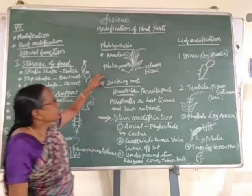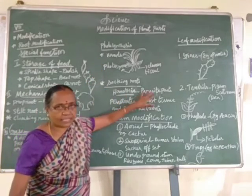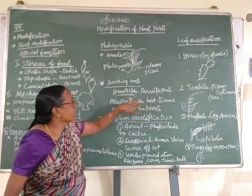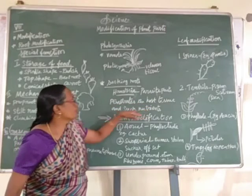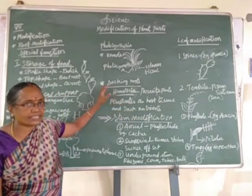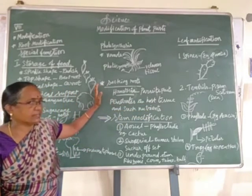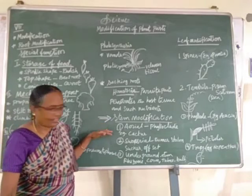Next, sucking roots — haustoria. Haustoria is found in parasitic plants. They penetrate the host tissues and suck the nutrients. That is the parasitic plant.